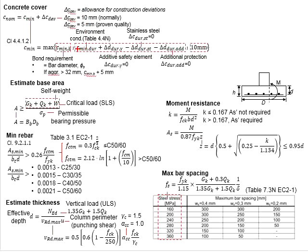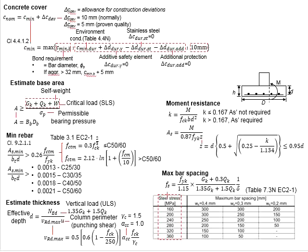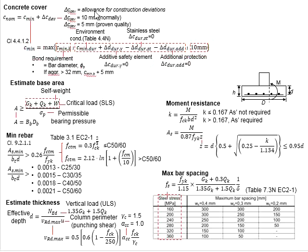The second part of the minimum cover is determined by its environmental conditions. Refer to Table 4.4 and you will need to identify the exposure class of the foundations. The minimum cover for the environmental conditions is determined accordingly. The third component of the minimum cover is determined by 10 mm. The larger value of these three components will be the minimum cover.